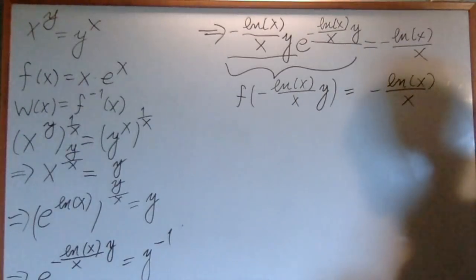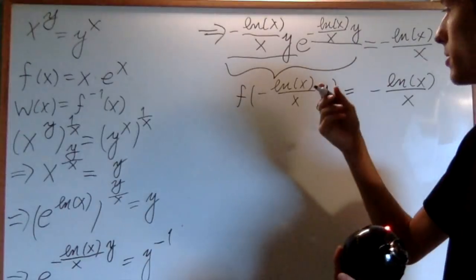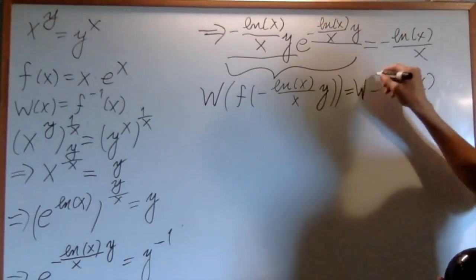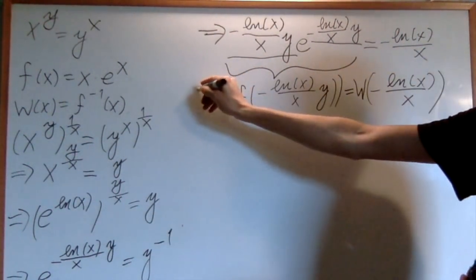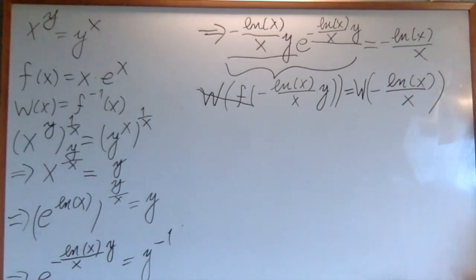And so, the great thing is, I can now cancel out this f using the Lambert W function. And so, this f goes away, and it doesn't go away on here, but it's fine, because we're only using one variable.